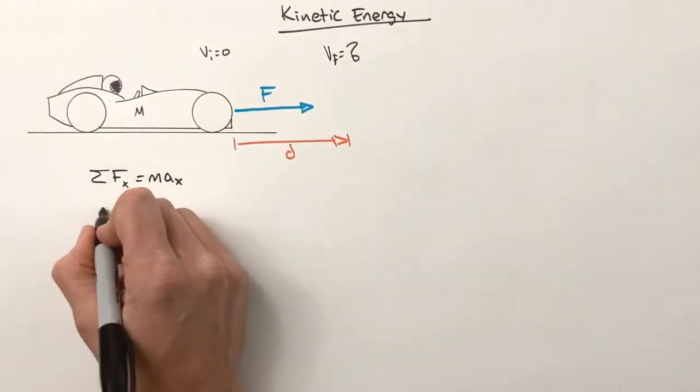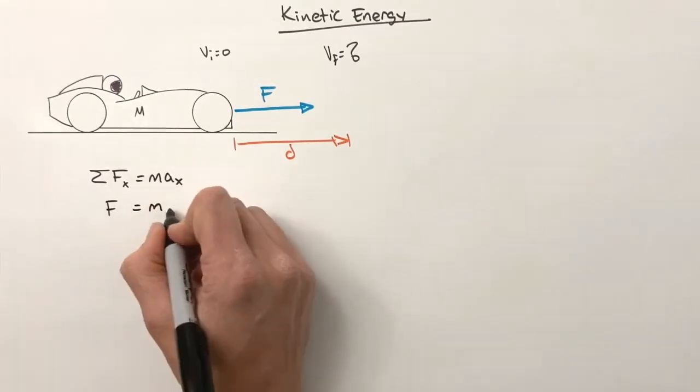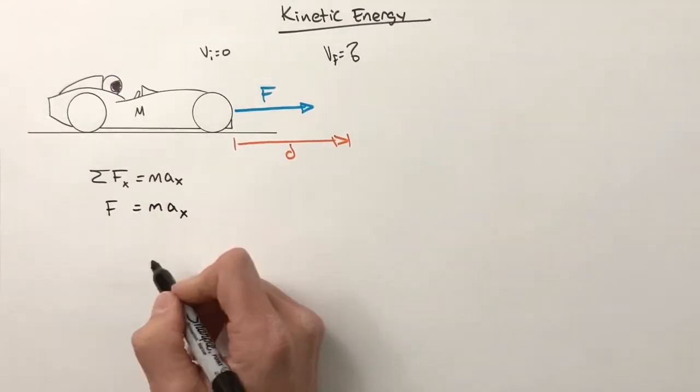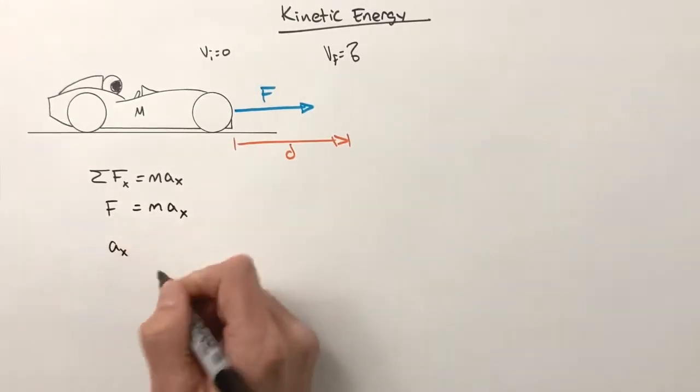There's only this force F acting forward. It's going to accelerate our mass m forward at some rate a in the x direction. So we could even go so far as to say the horizontal acceleration of this car is going to be F, the forward force, over m.